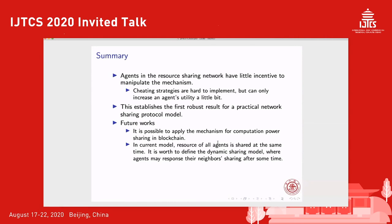Combining all these results, we show that agents in the resource sharing network have little incentive to manipulate because the cheating strategy is very hard to implement but can only increase utility a little bit. These results establish the first robust results for practical network sharing protocol models. In the future, we may consider applying such a mechanism for computational power sharing in blockchain scenarios. We should also define a corresponding dynamic sharing mechanism where agents respond to their neighbors' sharing after some time delay.